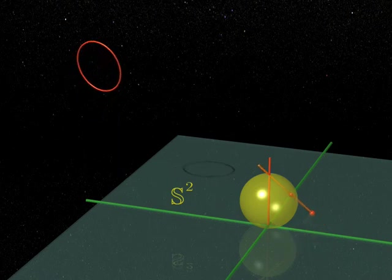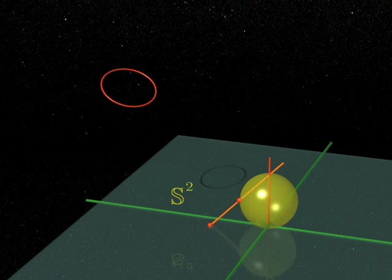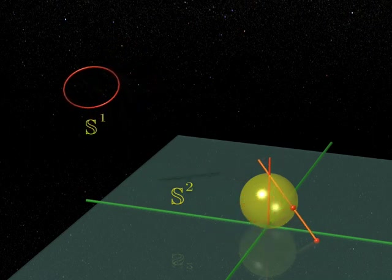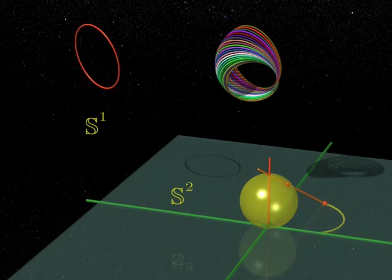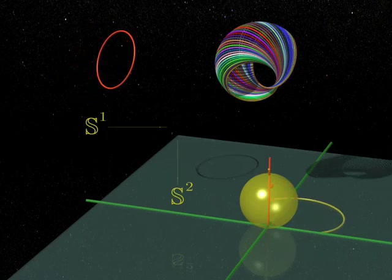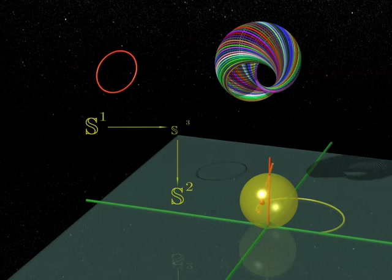So we have a circle for each point on the two-sphere. But a circle is a sphere of dimension one, isn't it? All these circles fill up the three-sphere. Each point on the three-sphere belongs to a single circle, and therefore defines a point on the two-sphere.